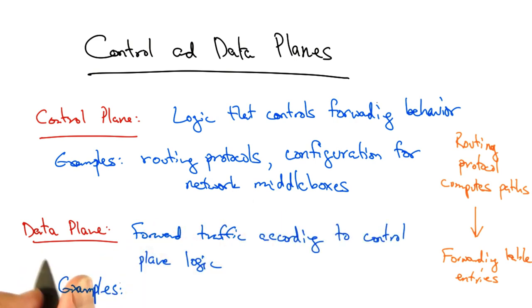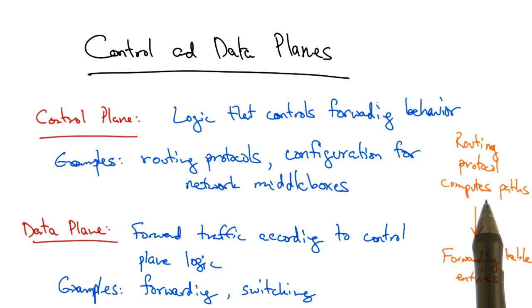Examples of data plane functions include forwarding packets at the IP layer and doing things like switching at layer two. To reiterate, routing protocol functions that compute the paths are control plane functions, whereas the act of actually taking a packet on an input port and forwarding it to an output port is a data plane function.